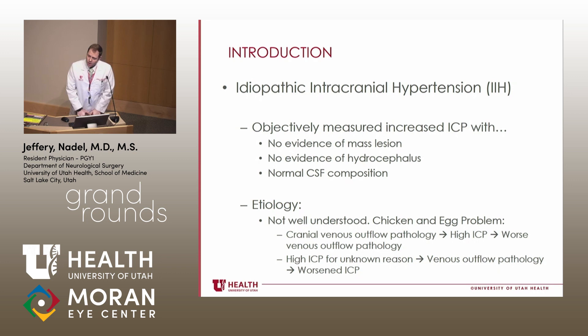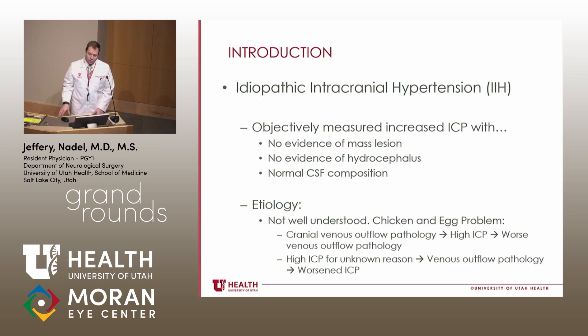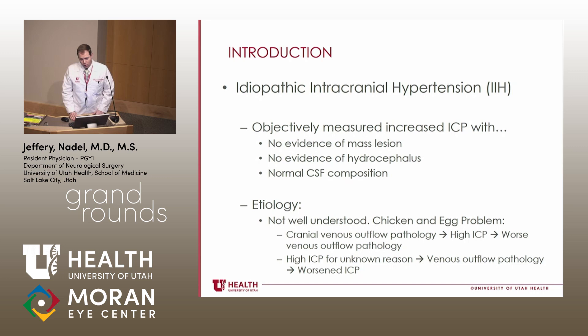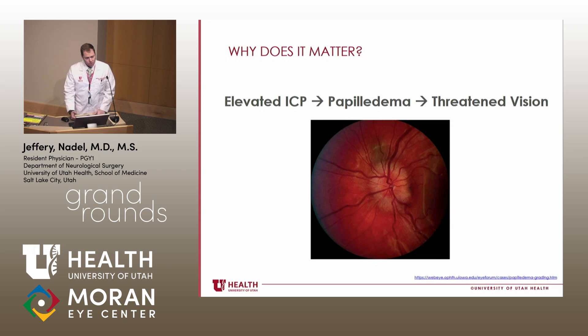In terms of the etiology, it's still not super well understood exactly what is happening with IIH — it's a little bit of a chicken-and-egg problem. Some suggest there may be cranial venous outflow pathology that results in high ICP, which in turn can worsen the venous outflow pathology by compressing veins. On the other side, there may be another reason the ICP is elevated, which leads to venous outflow pathology, which then worsens ICP.